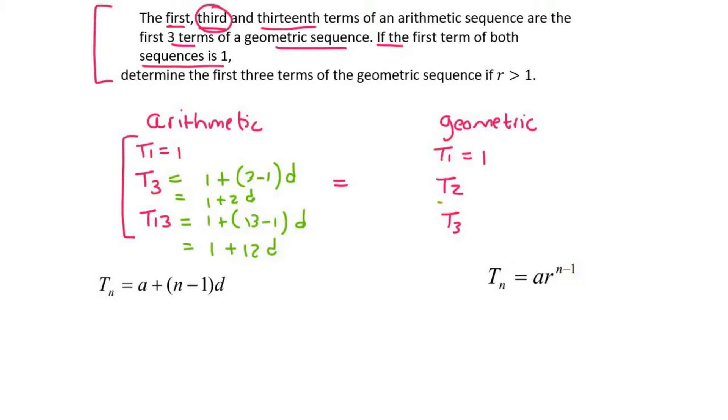And then for the geometric, for term two, that would be a times r to the two minus one. And term three would be a times r to the three minus one. And then we could simplify. We know that a is 1. So that's just one times r, because two minus one is one. And then this one will be r squared, or 1r squared if you would like to write it there, because a is 1. So let's just highlight what we now have. We've now got this equation, this equation, this equation, and this equation.